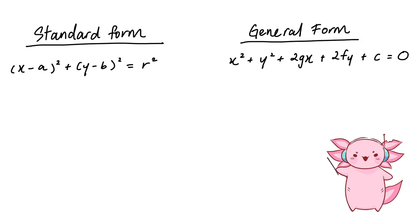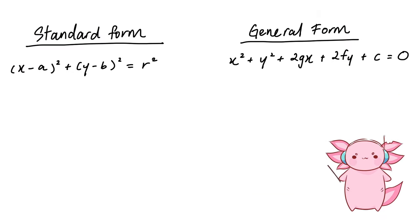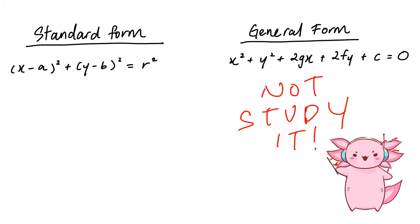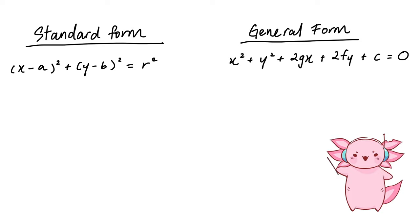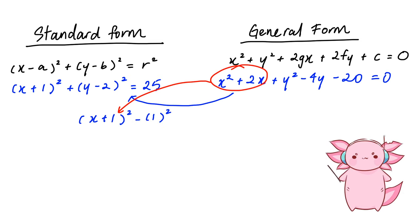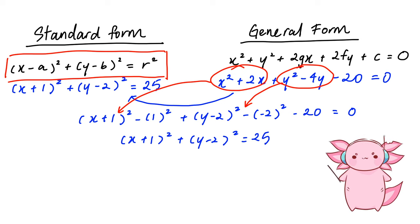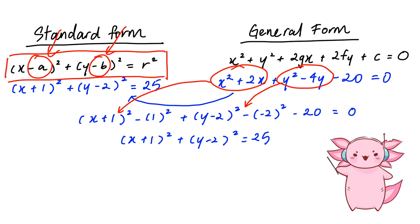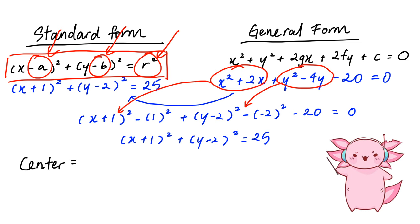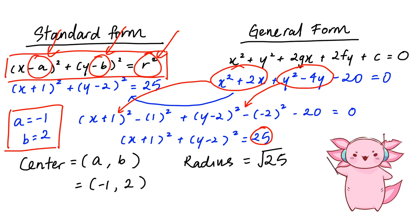Most A-Math textbooks give both standard form and general form for circle equations. The general form is complicated and a pain to memorize, so we convert it to standard form by completing the square: group x terms, complete the square, group y terms, complete the square again, then shift numbers to the other side. The standard form formula is (x − a)² + (y − b)² = r². The center is (a, b) and the radius is r — note it's r-squared on the right side, not r.